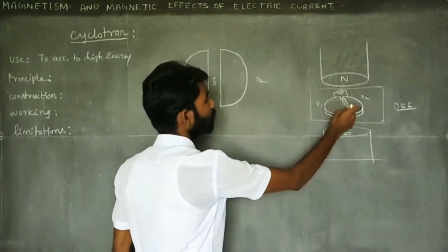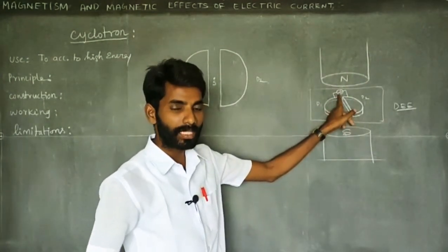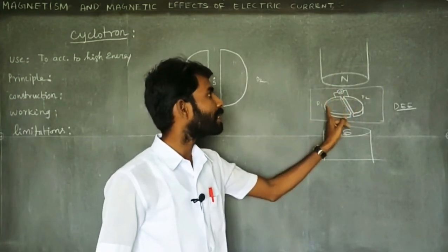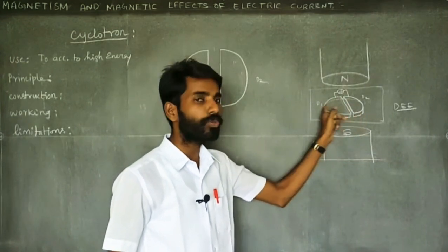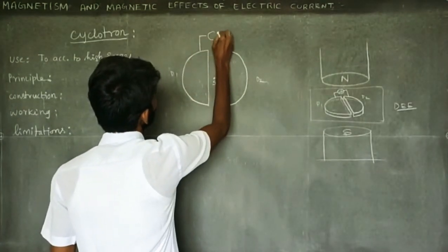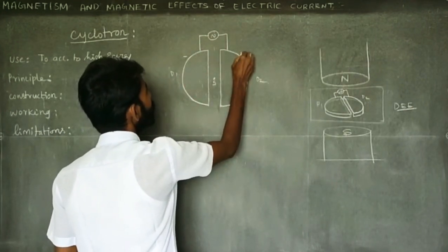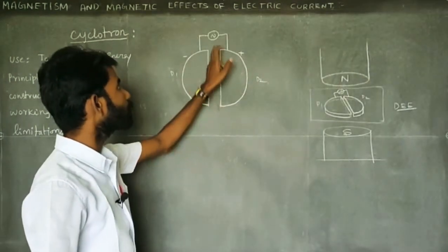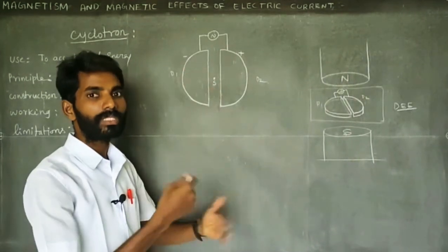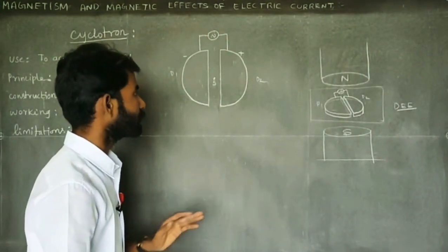Now, in D1 and D2, what is happening is the high frequency oscillator — otherwise called the potential alternator — in the high frequency electric oscillator. In the D there is a potential. If you have to connect well with the high frequency oscillator, the D1 is working in time. The high frequency oscillator is connected together.